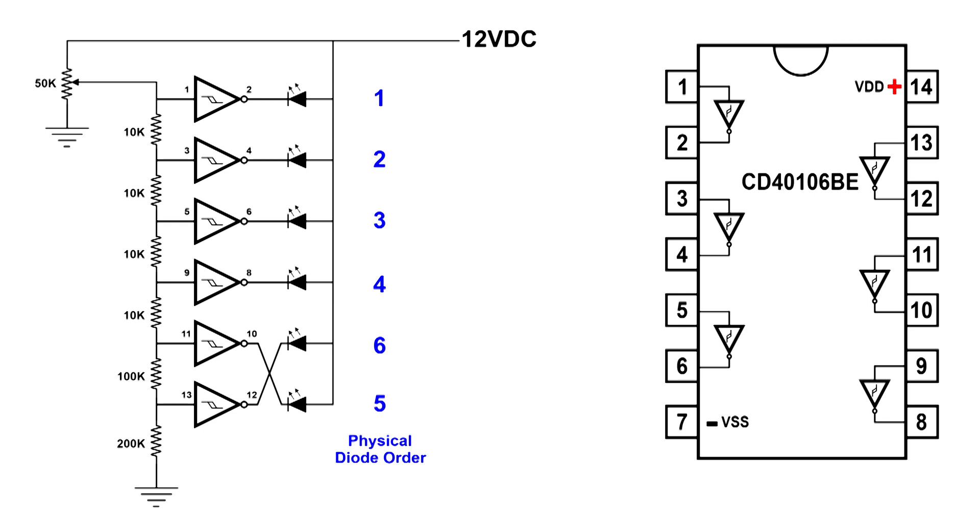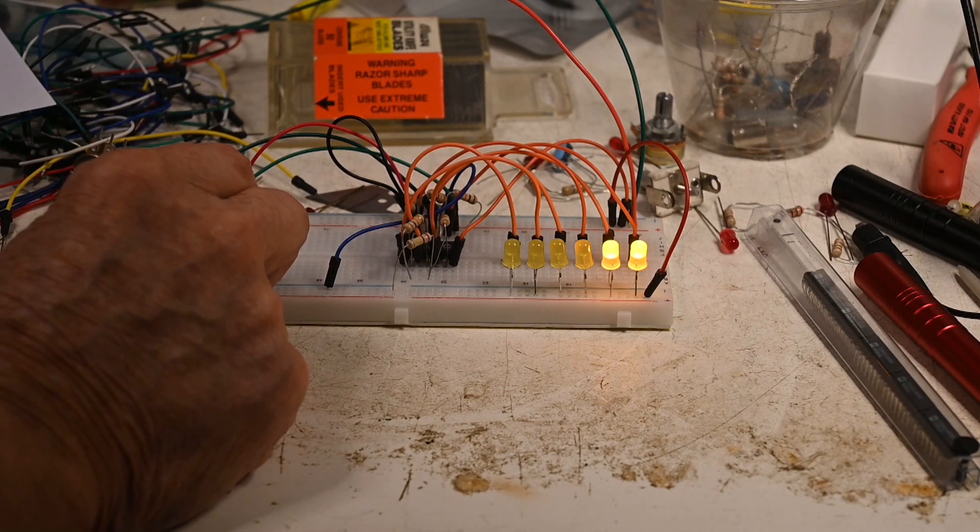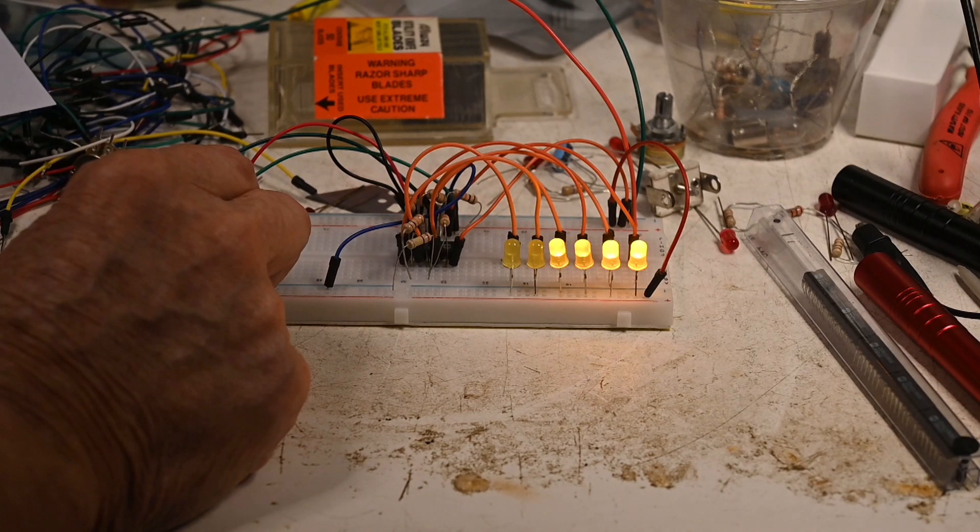Plus, using this setup, you wouldn't necessarily have to have the same resistance between the different Schmidt triggers. Depending on your purpose, you could have much larger resistors earlier to delay turning on the next Schmidt trigger. It depends on what your purpose is.